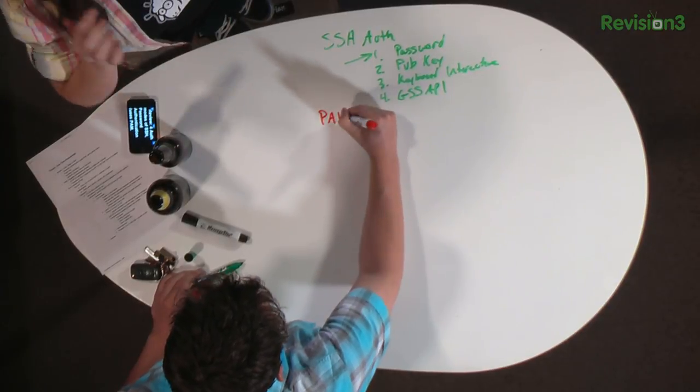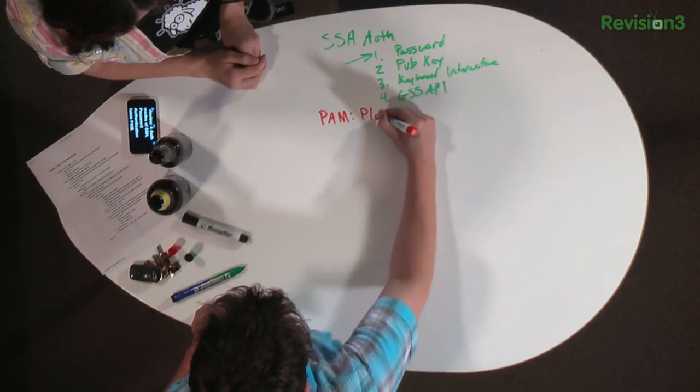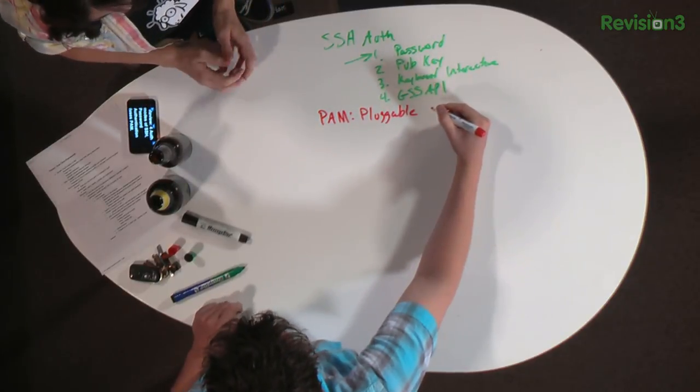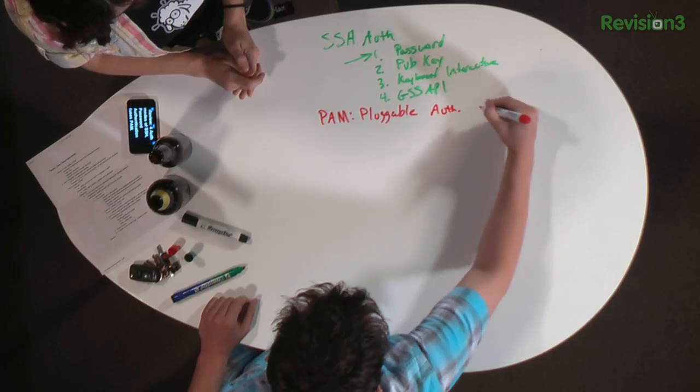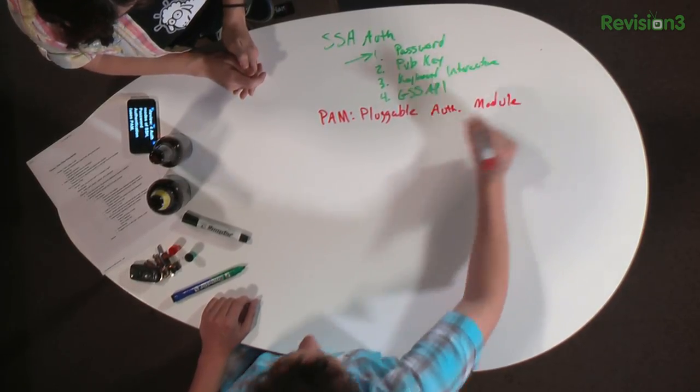To understand password-based authentication again, we need to realize that on the Unix side of the world, what we're talking about is PAM — Pluggable Authentication Module. PAM is basically the default you're going to find in Unix-like operating systems. Your Linuxes of the world and all the variants are going to use PAM to do authentication.